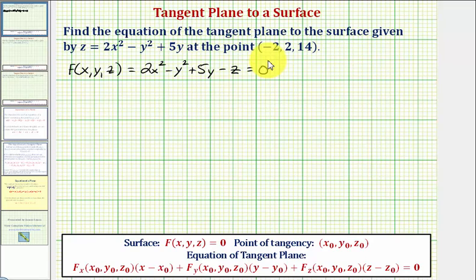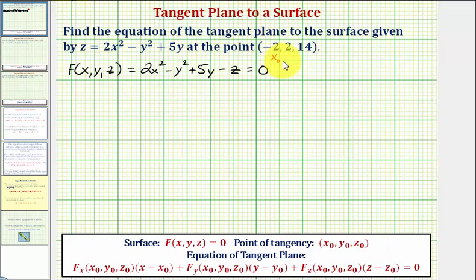Notice how the point of tangency is the point x-sub-zero, y-sub-zero, z-sub-zero. So in our case, x-sub-zero equals negative two, y-sub-zero equals two, and z-sub-zero equals fourteen.